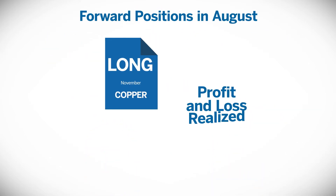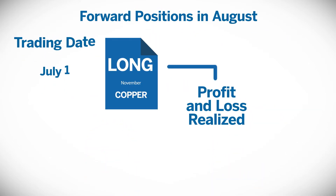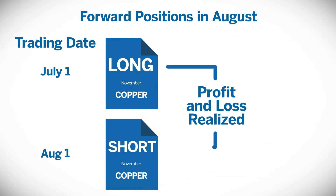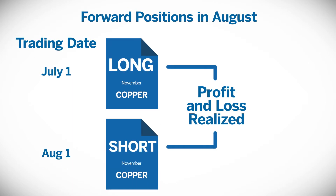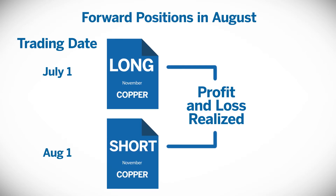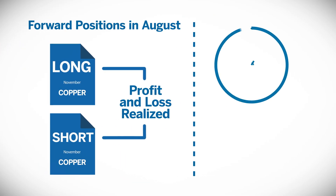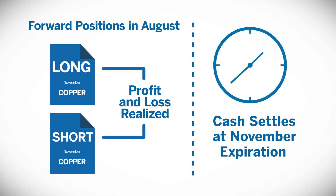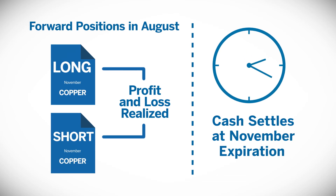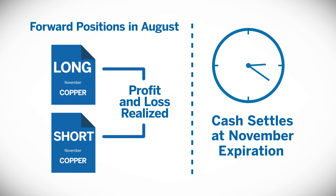For example, a long forward contract could be opened on July 1st for the delivery month of November and then closed on August 1st. At this point, P&L is realized, but it would not settle until the November contract had expired. This means even the P&L of the closed positions are only available after settlement of the contracts, resulting in four months of waiting for the profit earned from this trade.